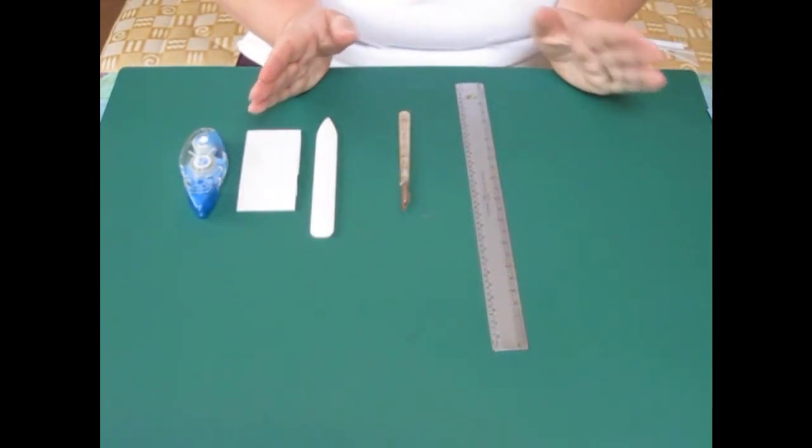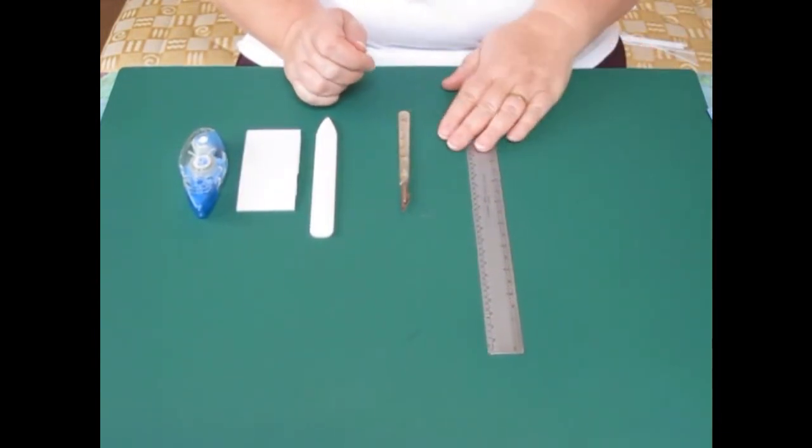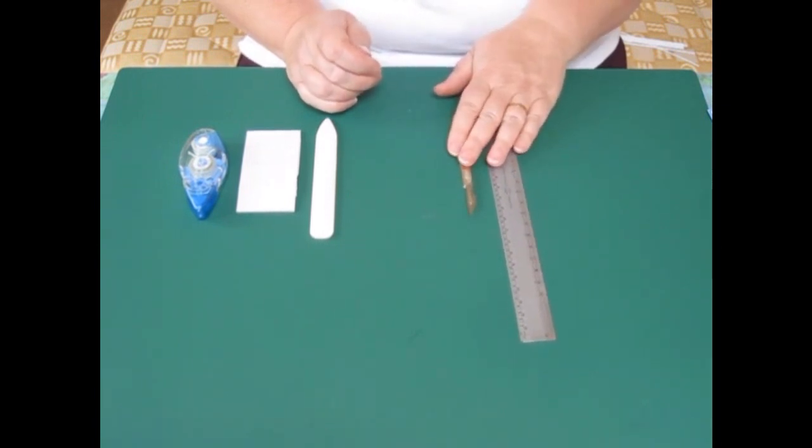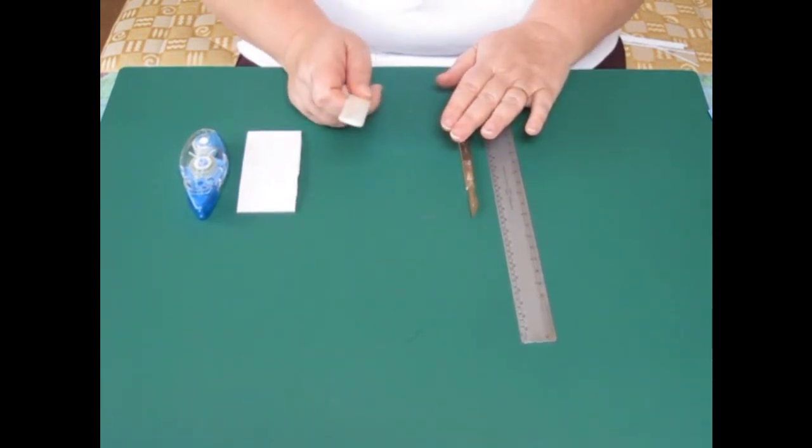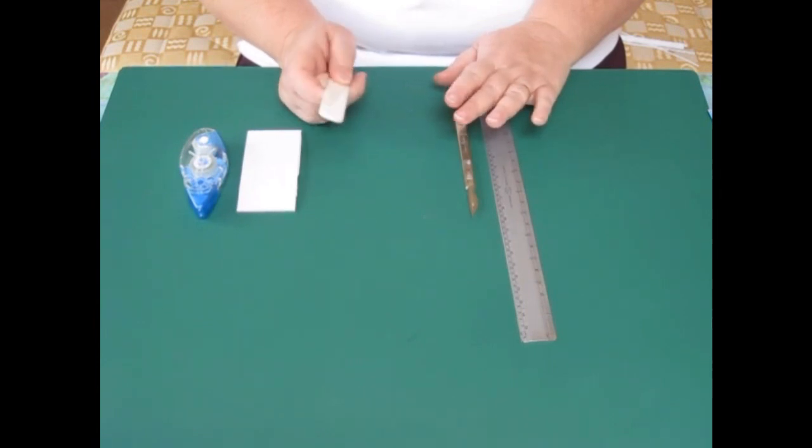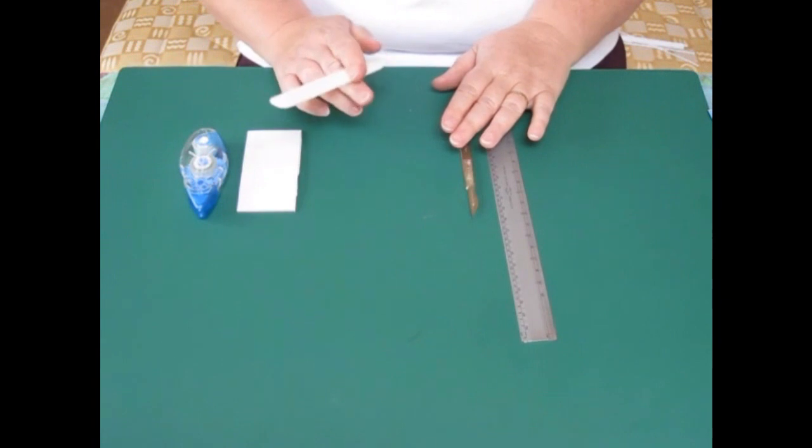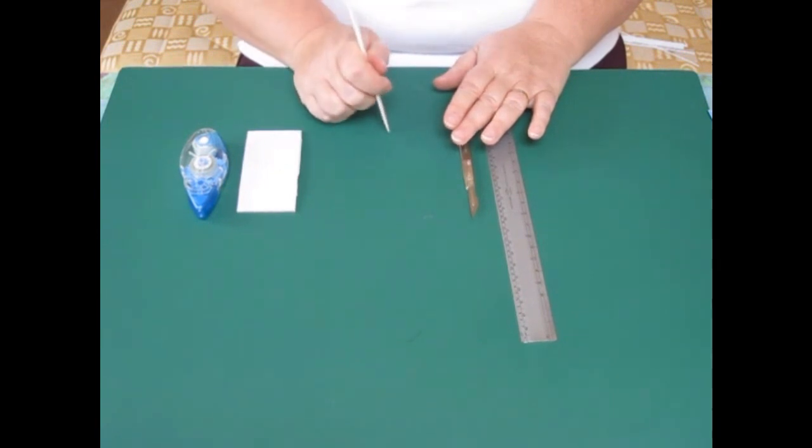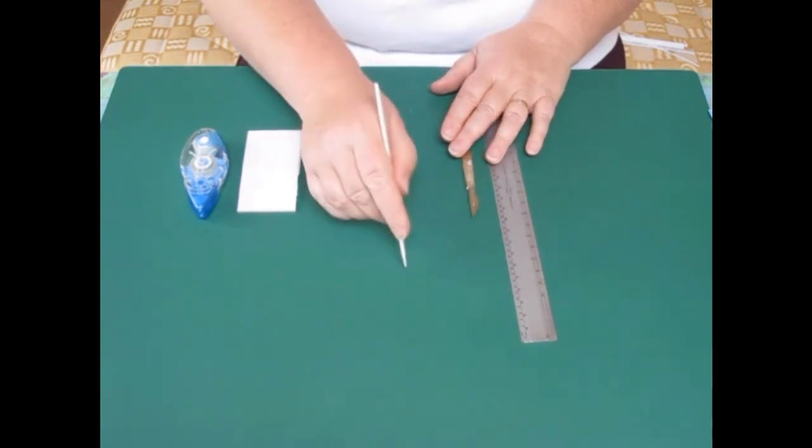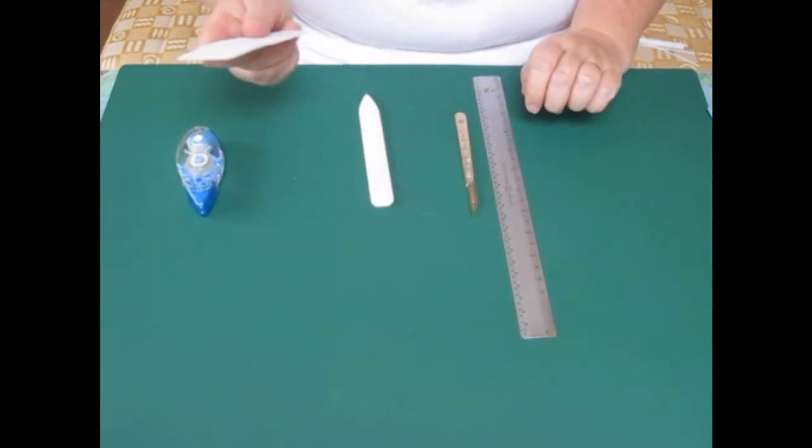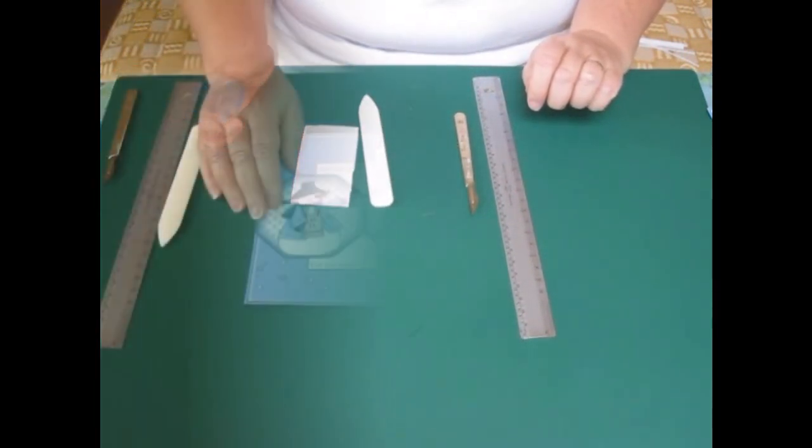Things you need to be able to make this card, pretty much the usual things. A metal ruler and a scalpel. A bone folder for scoring and creasing lines. Now if you don't have a bone folder, you can score lines with an old biro that's got no ink left in it or with your embossing tool. Just to hold against the ruler and score. Double sided foam pads and a glue mess.